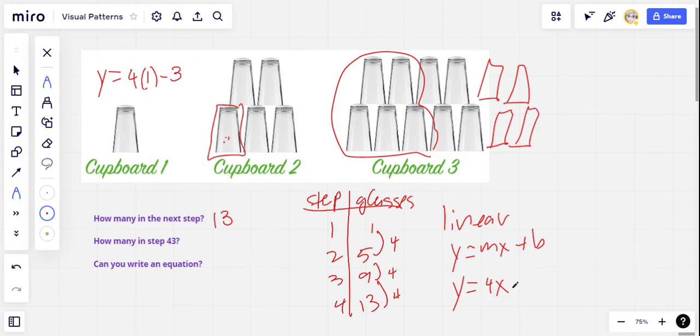Now I'm going to put that also in our equation. And then we're going to test this. To be double sure this is really the right equation, let's try it with step two. So Y equals four times two minus three. Four times two is eight minus three is five. That's how many glasses we have. Let's try one more. Y equals four times step three minus three. And three times four is 12 minus three is nine. That's how many glasses in cupboard three. Looks like we've got our equation correct. So Y equals 4X minus 3.